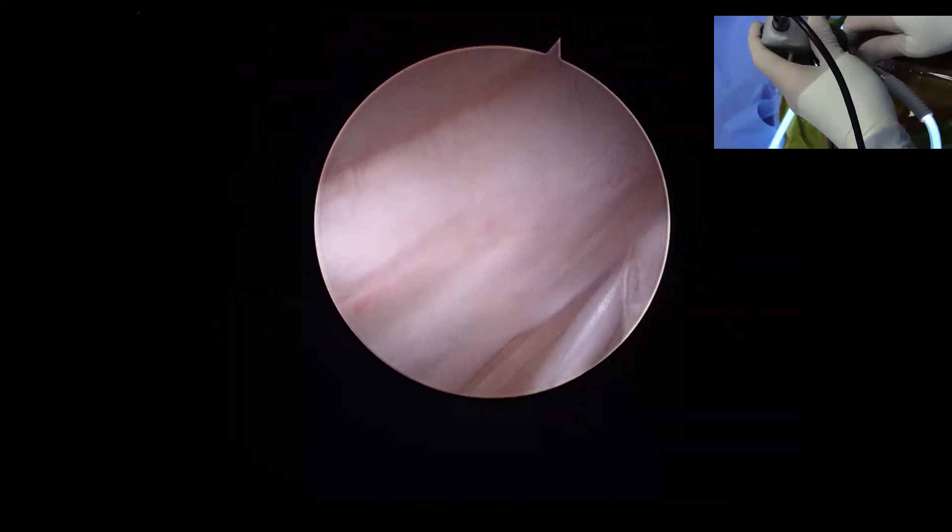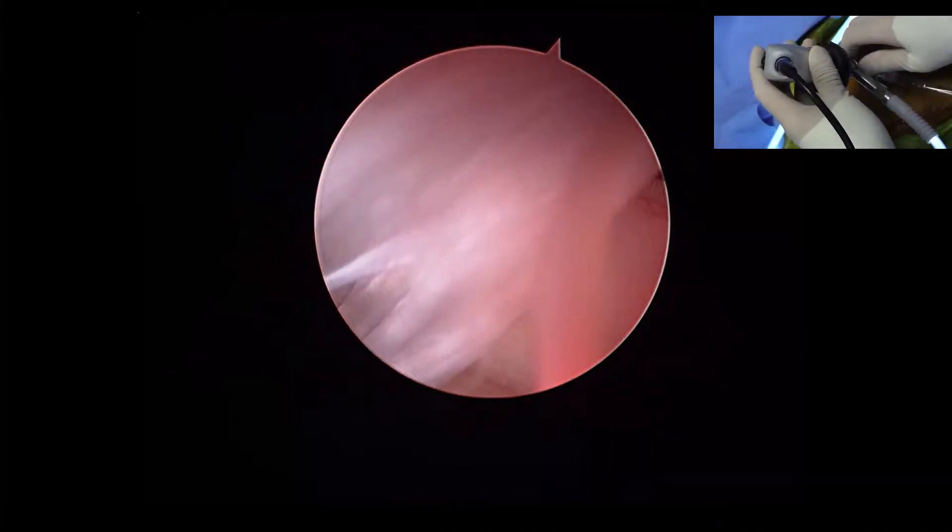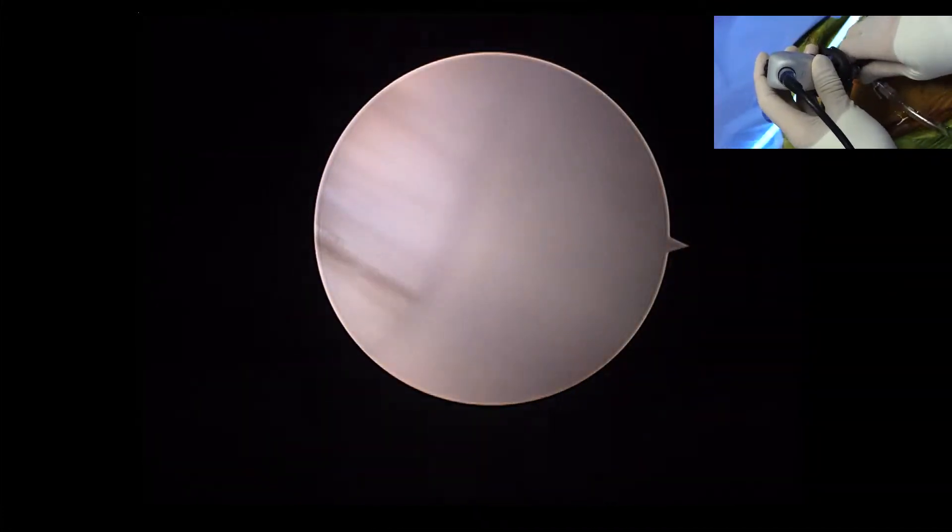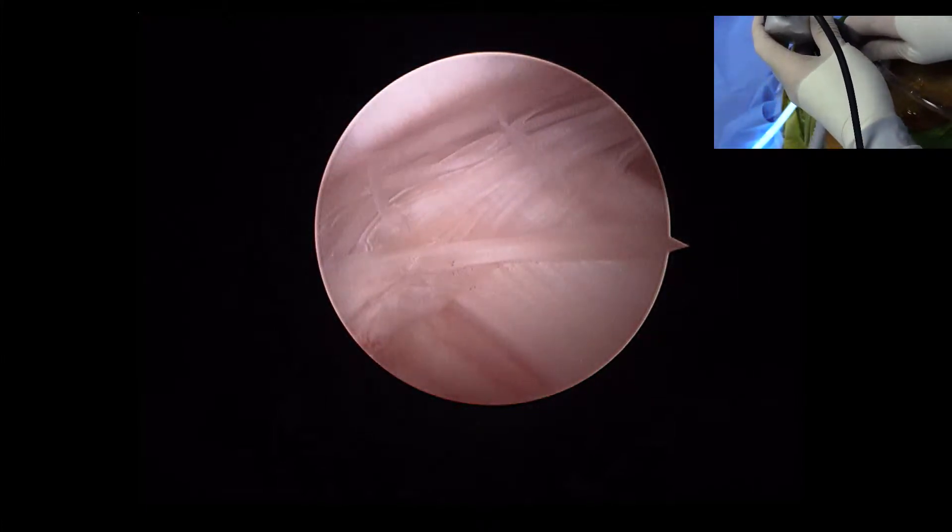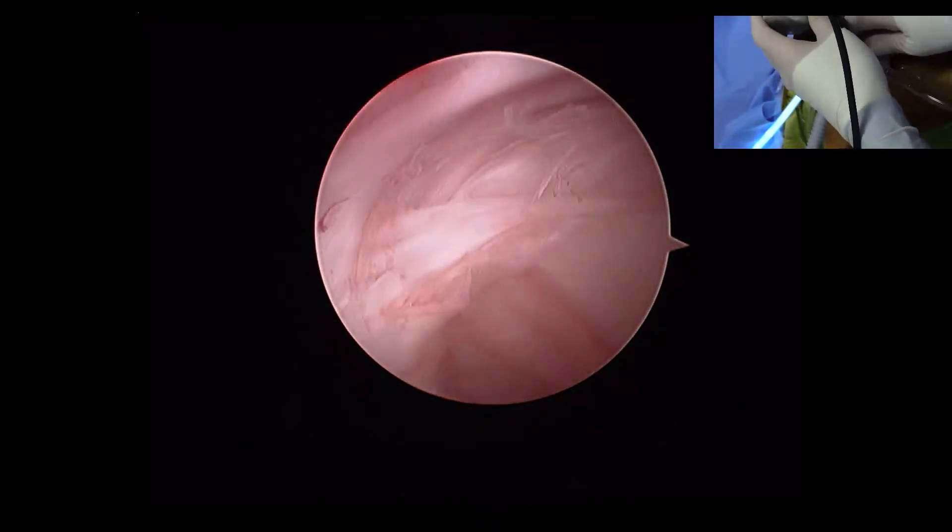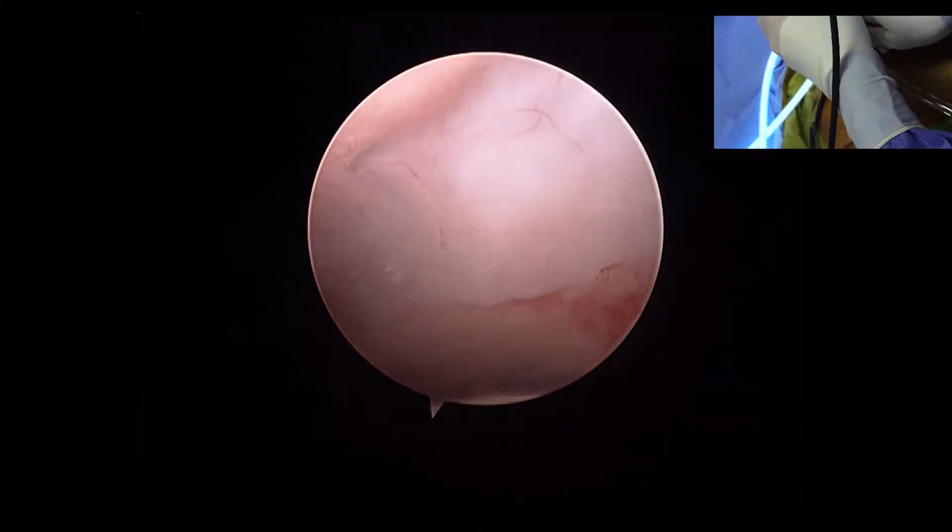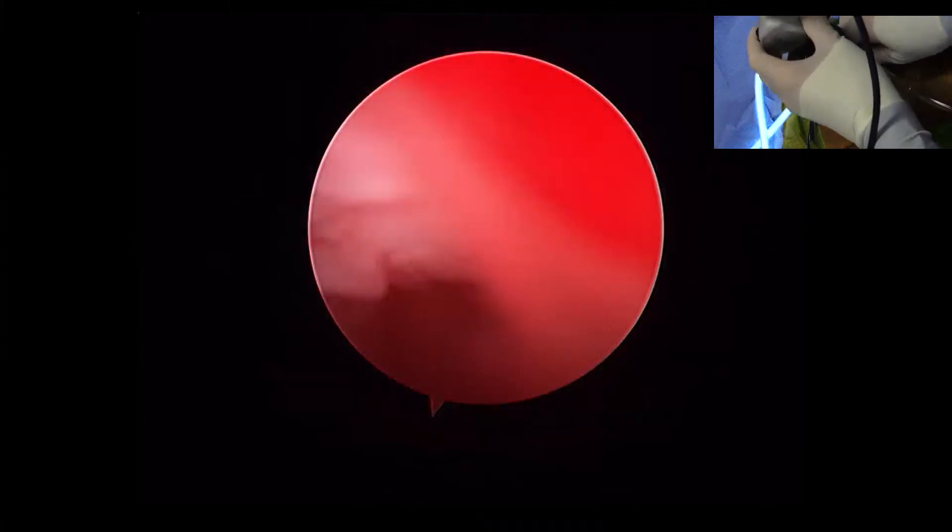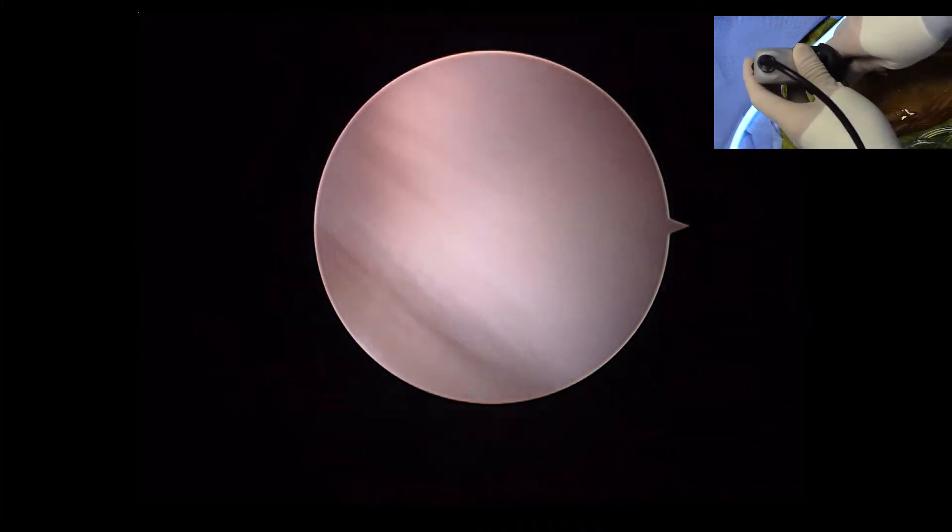Okay. So that should be medial glenohumeral ligament there and there is some fraying. Let me see if I can see the biceps tendon. So that's all fraying of the medial glenohumeral ligament right there. This is the humeral head at the bottom down here. That's medial joint capsule there. I'll move my scope up forward and see if we can see the biceps tendon.